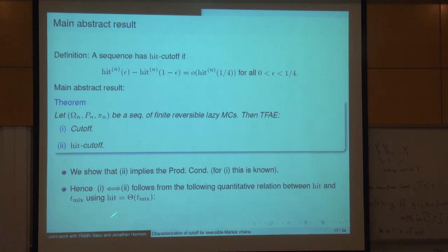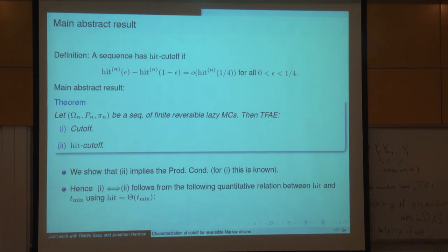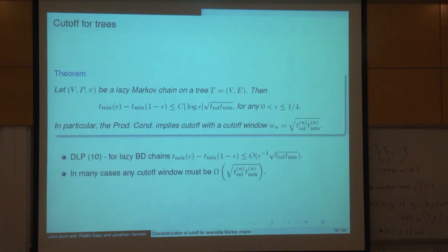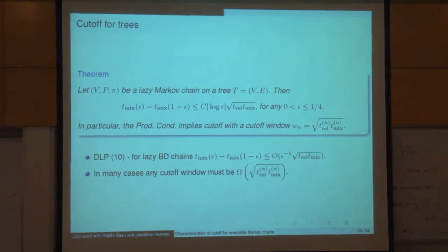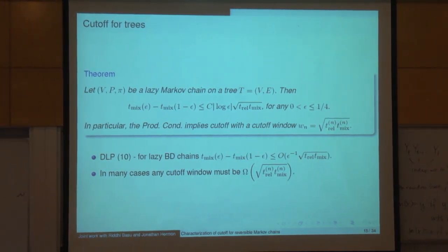So behind every abstract theorem there is a more useful inequality. t_mix(2ε) can be compared to two hitting times, with an error of the order of the relaxation time. Recall Perla's lecture where mixing time was shown to be equivalent to hitting time up to constant factors. Here there are no hidden constants — everything is spelled out. t_mix and hit(ε) with constant one in front and hit(3ε) with constant one in front, with correction terms of the order of the relaxation time.